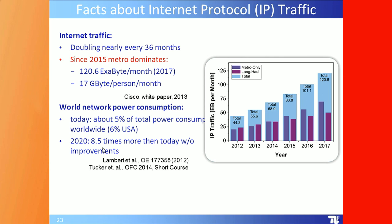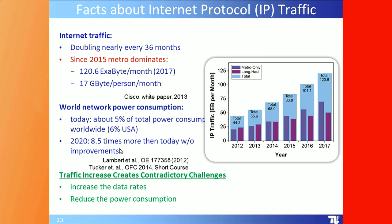Predictions from Cisco and universities suggest that by 2020 — which is very soon — traffic will be eight times what it is today if there are no improvements. We must think not only about going faster and higher as in the Olympics, but about using less energy. Traffic increase creates contradictory challenges: we want to increase data rates while simultaneously reducing power consumption.